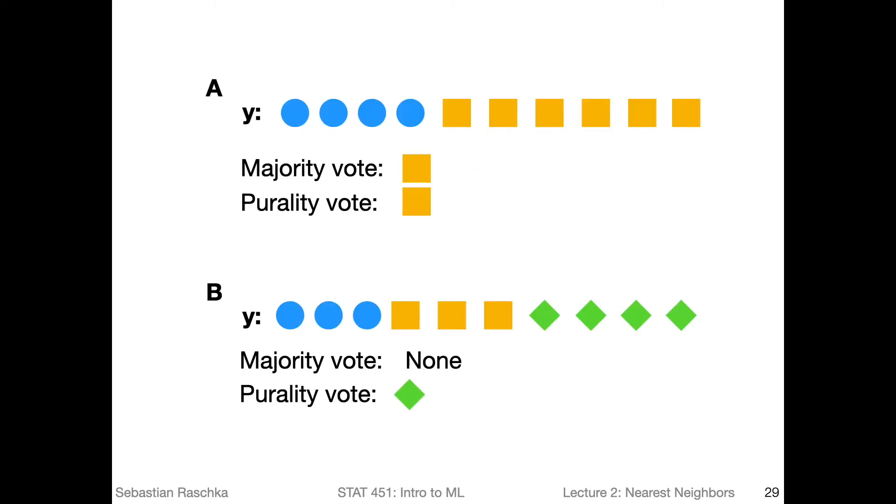I just said in k-nearest neighbors we use the majority vote to assign the class label. Let us be a little bit nitpicky about the term majority vote now for a second. A majority vote is usually, if we have two different classes, and we look at the one that is in the majority, that means more than 50%. So in this case, the majority vote would be the square. Here, this would be the square symbol, here would be the majority vote.